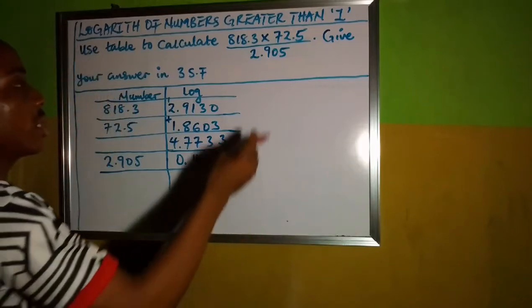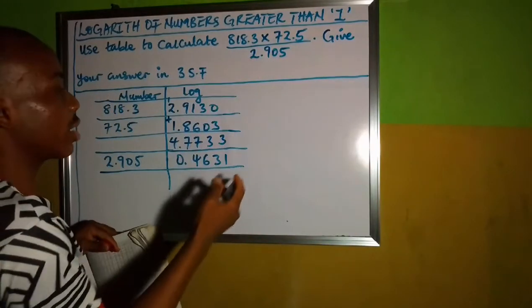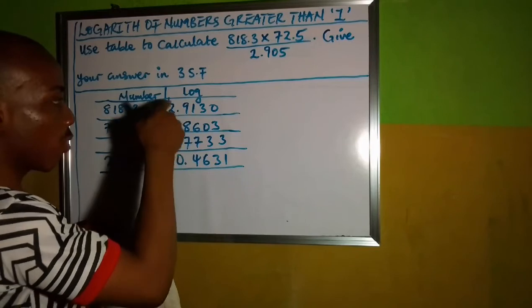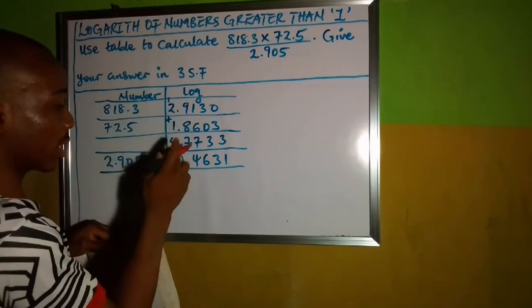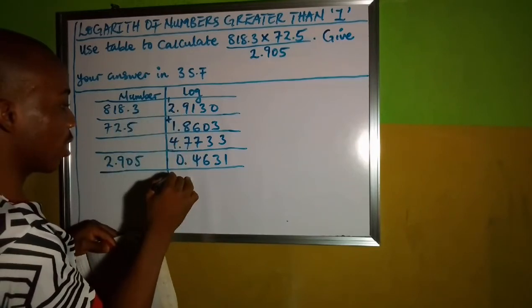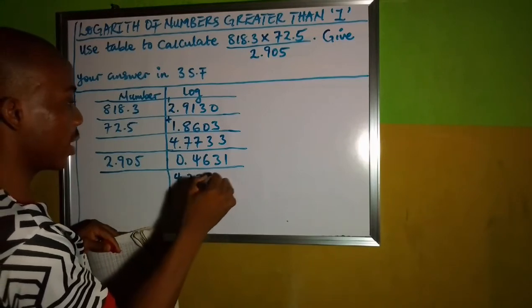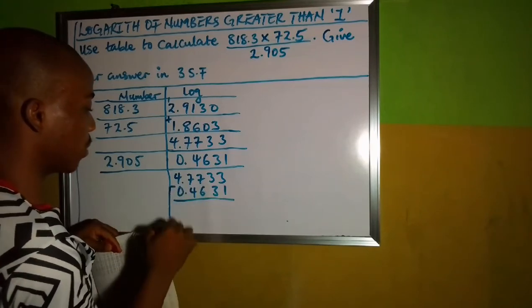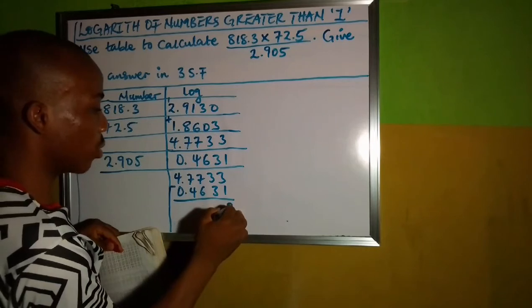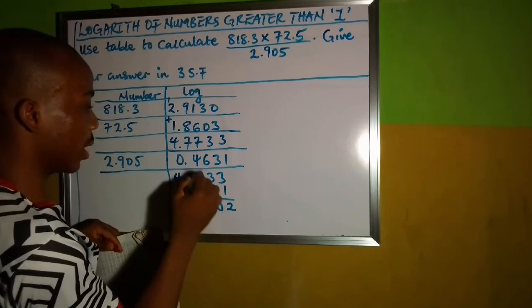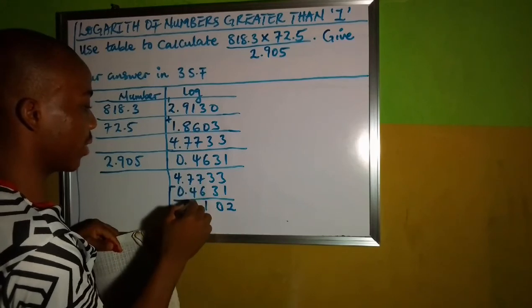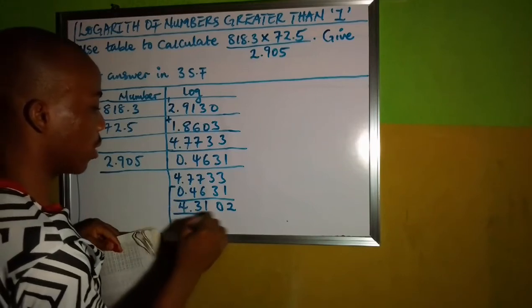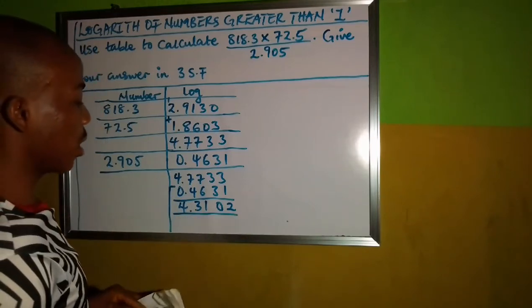Now, because this is division, from the law of logarithm, division is simply subtraction. We are going to subtract this from this. This is the answer we got from the product of this, which is addition. So you then subtract 4.7733 minus 0.4631. 3 minus 1 is 2, 3 minus 3 is 0, 7 minus 6 is 1, 7 minus 4 is 3, 4 minus 0 is 4.